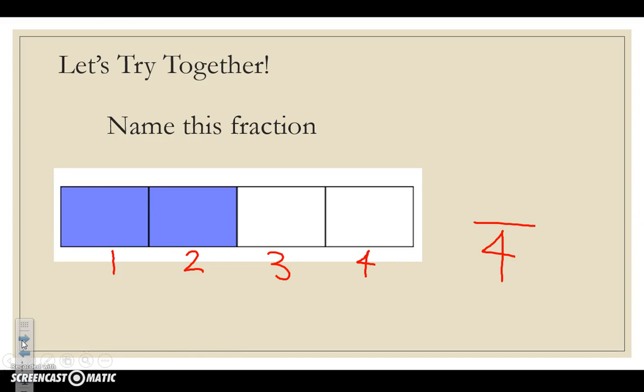We now have to go back and see how many parts are shaded in. We have 1, 2. This becomes our numerator or the number on top. Therefore, this fraction is written as 2 fourths.